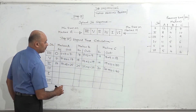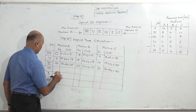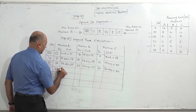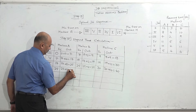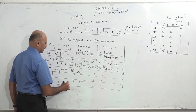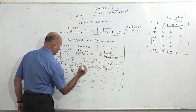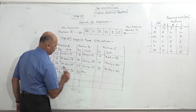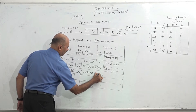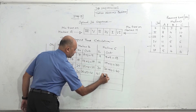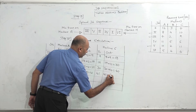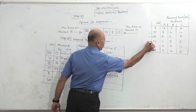Job 4: time is 11, 5, 6. Machine A in-time is 25, so 25 plus 11 = 36. In-time on B is maximum of 36 and 29 = 36. Time on B is 5, so 36 plus 5 = 41. In-time on C is maximum of 41 and 40 = 41. Time on C is 6, so 41 plus 6 = 47. Job 4 is done.